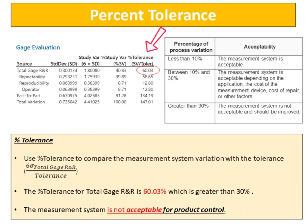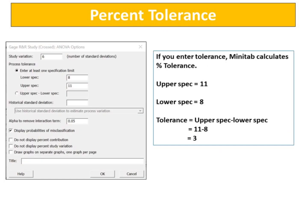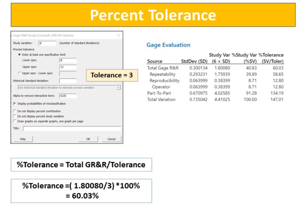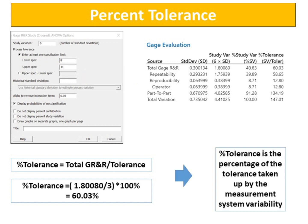Percent Tolerance: Use percent tolerance to compare the measurement system variation with the tolerance. The percent tolerance for total gauge R and R is 60.03%, which is greater than 30% — the measurement system is not acceptable for product control. Upper spec equals 11, lower spec equals 8, so tolerance equals 11 minus 8 equals 3. Percent tolerance equals total GR&R divided by tolerance, which equals 60.03%. The percent tolerance is the percentage of the tolerance taken up by the measurement system variability.